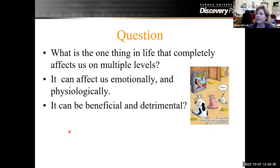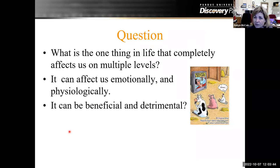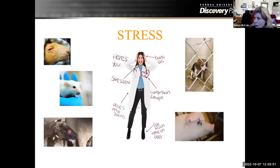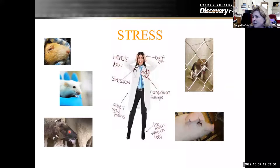So what is the one thing in life that completely affects us on multiple levels? It can affect us emotionally, it can affect us physiologically, and it can also be beneficial or detrimental depending on the type of process that we run into. That one thing in life is stress. You can see here in some of these animal models that these are typically stressed out animals.